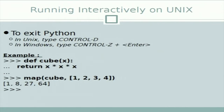To exit from the Python interpreter in Unix we type Control+D, and in Windows we type Control+Z plus Enter. Some examples in interpreter mode: we can define a function 'def cube(x)' which returns the cube, and there is a default function 'map(cube, ...)' which returns the cube values of a passed list.